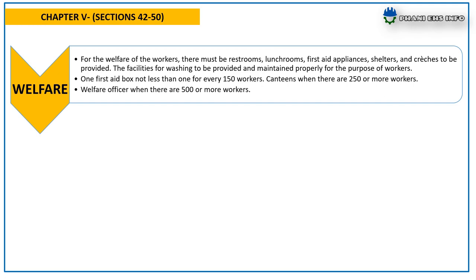Chapter 5, Welfare, covers sections 42 to 50. For the welfare of workers there must be: restrooms, lunchrooms, first aid appliances, shelters and crèches to be provided; facilities for washing to be provided and maintained; a first aid box with not less than one for every 150 workers; a canteen where there are 250 or more workers; and a welfare officer when there are 500 or more workers.